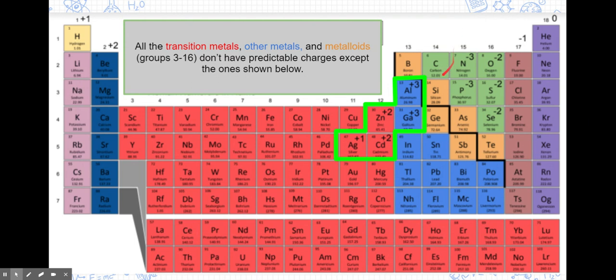That's not including these in green. These elements in green, we do have a predictable charge. But all of the other elements that are transition metals and the other metals in groups 3 through 16, we would need a little bit of help.